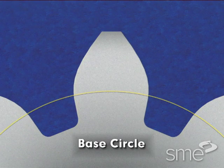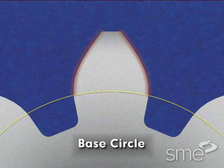The base circle is the gear diameter from which the involute tooth profile is developed.